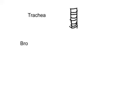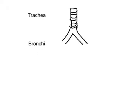The trachea actually branches off to two bronchi. There are two bronchi and there are two lungs, so you can guess where each bronchus goes — each bronchus goes into a separate lung. I'll draw the lung on each side.